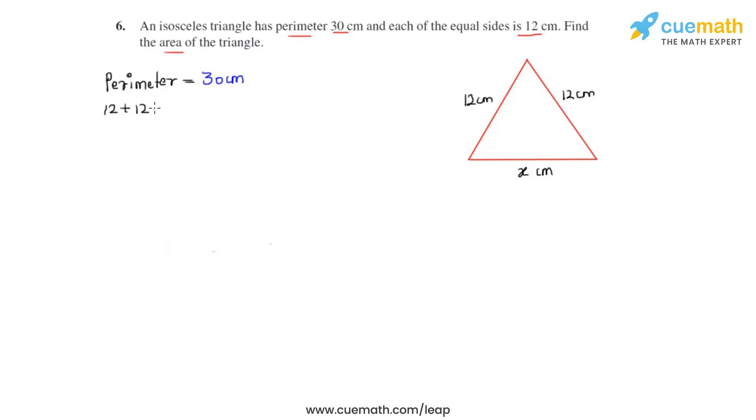Now a perimeter is found by adding up all three sides. So let's add 12 plus 12 plus x and equate it to 30. So from this we can get the value of x to be equal to six centimeters.